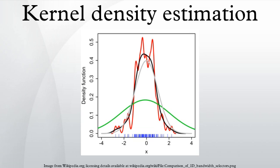One difficulty with applying this inversion formula is that it leads to a diverging integral, since the estimate φ̂(t) is unreliable for large t. To circumvent this problem, the estimator φ̂ is multiplied by a damping function ψ(h,t) = ψ(ht), which is equal to one at the origin and then falls to zero at infinity. The bandwidth parameter h controls how fast we try to dampen the function. In particular when h is small, then ψ(h,t) will be approximately one for a large range of t, which means that φ̂(t) remains practically unaltered in the most important region of t.